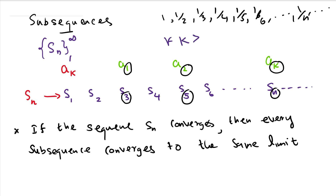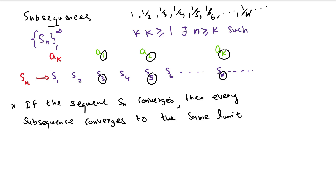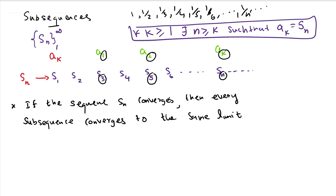We can express this mathematically: for all k greater than or equal to 1 — that is, for all indices of the subsequence — there exists an index n strictly greater than k such that A_k equals S_n. This means for each term in the subsequence there is an equivalent term in the main sequence, but the index of the main sequence term is larger than the corresponding subsequence index. So I've written that relationship as a mathematical expression.